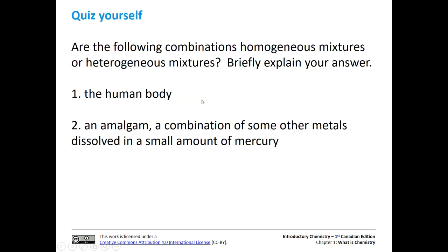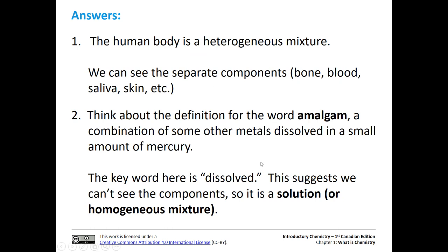Let's quiz ourselves again. Are these combinations homogeneous or heterogeneous mixtures? The first is the human body, and the second is an amalgam — a combination of some other metals dissolved in a small amount of mercury. The human body is a heterogeneous mixture because we can see bone, blood, saliva, and skin separately. The trick with the amalgam is that word 'dissolved' — that's your key that this is a solution. We dissolve sugar to make a solution in water, we dissolve salt to make a solution in water, and we dissolve metals in mercury to make an amalgam. So those are all homogeneous mixtures.